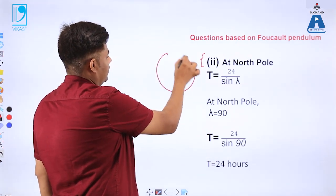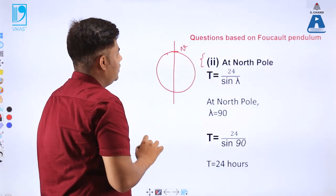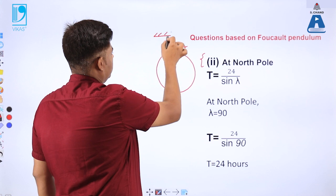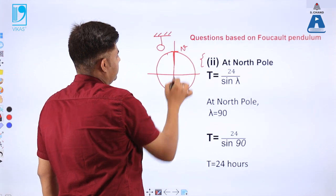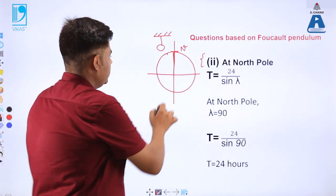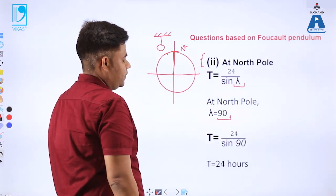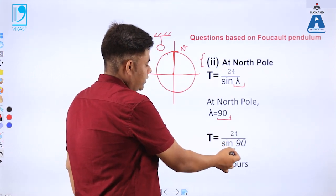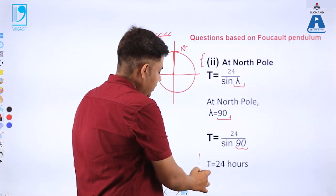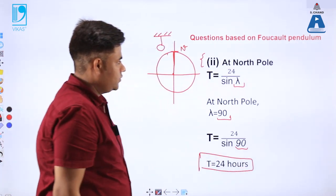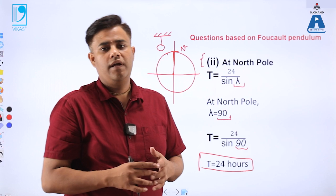So at 45 degrees north the pendulum covers the entire revolution in 33.9 hours. The third case: when the pendulum is placed at the North Pole, the angle lambda is 90 degrees. Substituting lambda as 90 degrees: T equals 24 divided by sin 90, and since sin 90 equals 1, the time period is 24 hours — exactly matching the rotation period of the Earth. These formula-based questions are important for examination.